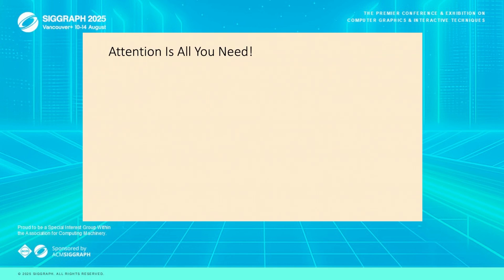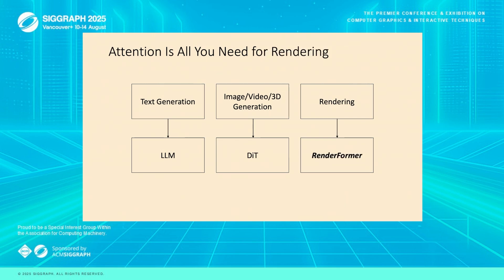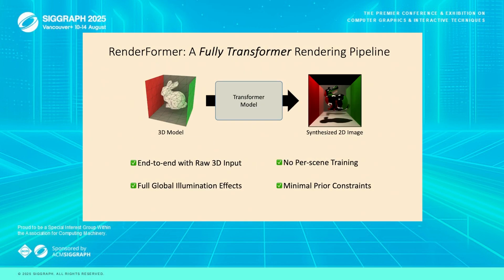We know that attention is all you need in a wide range of applications, including both text and visual content generation. This leads to the question: can transformers also be used for rendering? And we found that the answer is actually yes — attention is still all you need for rendering. Our solution is Renderformer, a new, fully transformer-based rendering pipeline.